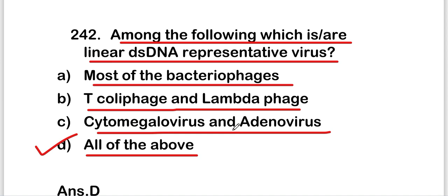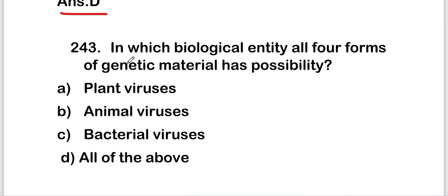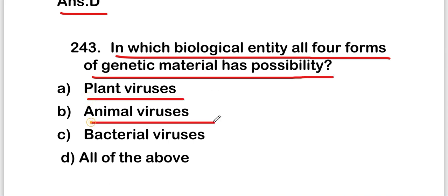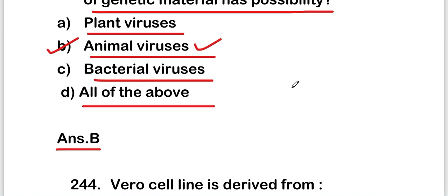The next question is: in which biological entity are all four forms of genetic material possible? Options are plant viruses, animal viruses, bacterial viruses, or all of the above. The right answer is option B — animal viruses. Animal viruses are the biological entity where all forms of genetic material are possible: single-stranded DNA, double-stranded DNA, single-stranded RNA, or double-stranded RNA.